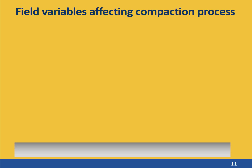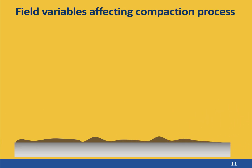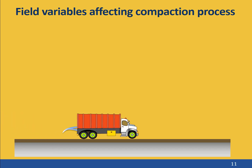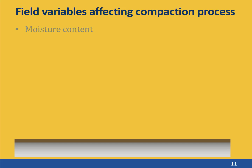To close this webcast, let's overview the field variables that affect compaction. First, let's review the process: we dump fill material on the desired location, smooth it with a dozer to a uniform lift thickness, moisture condition the soil if needed, and then use compaction equipment to compress the soil. Moisture content is critically important in the compaction of clay and silty soils — less so for clean sands and gravels — and we will have an entire lab class devoted to measuring its effects. The type of equipment is also important and must be properly matched to the soil type.